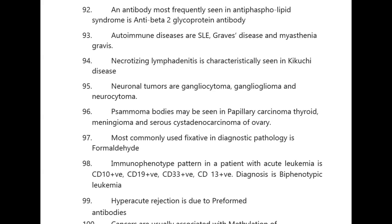Neuronal tumors are gangliocytoma, ganglioglioma, and neurocytoma. Psammoma bodies may be seen in papillary carcinoma of the thyroid, meningioma, and serous cystadenocarcinoma of the ovary.